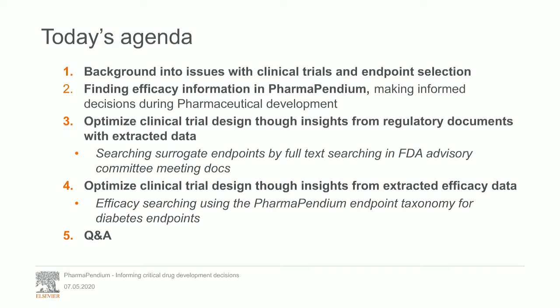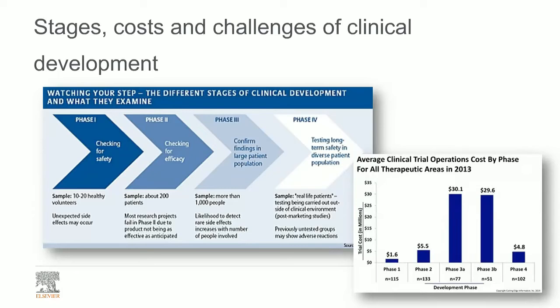Let's dive in. As most of you are no doubt aware, clinical research is divided over multiple phases — phase one, phase two, phase three, and phase four. From phase one to phase three, clinical research gets more and more expensive. Not surprisingly, the bulk of the costs of clinical development falls in phase three research.